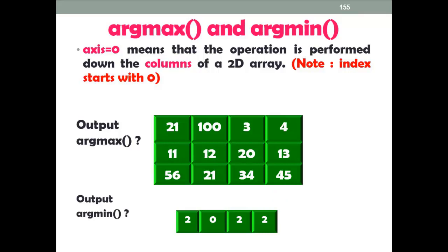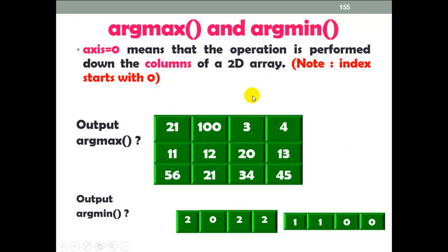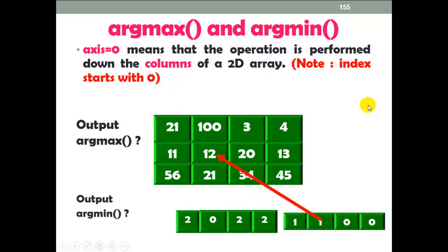The same logic applies for argmin with axis equal to 0 — column-wise. Again we get 4 output values because there are 4 columns indexed 0 through 3. The first minimum value is available at index 1 of column 0, followed by values at indices 1, 0, and 0 for the remaining columns.